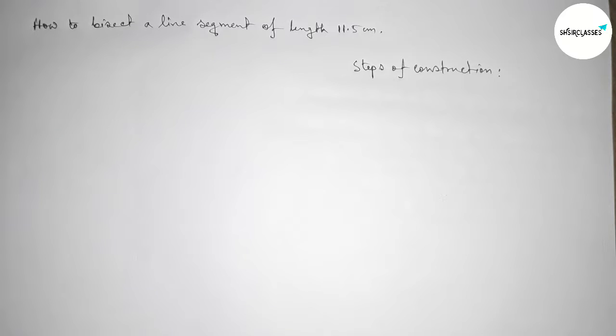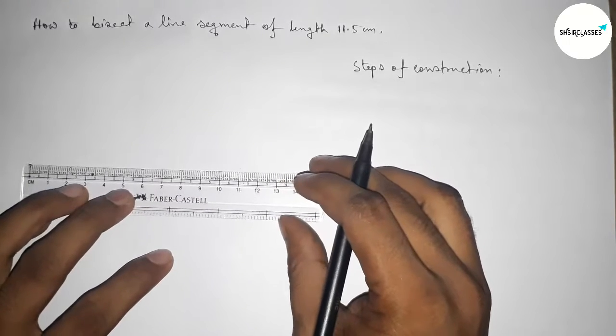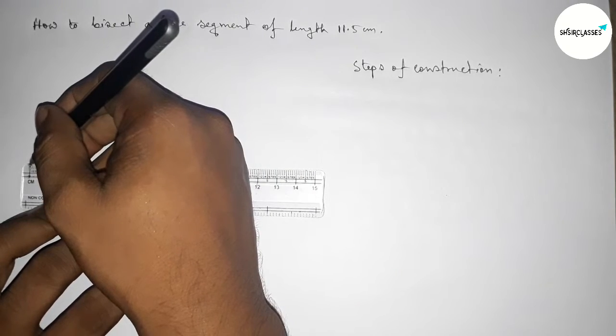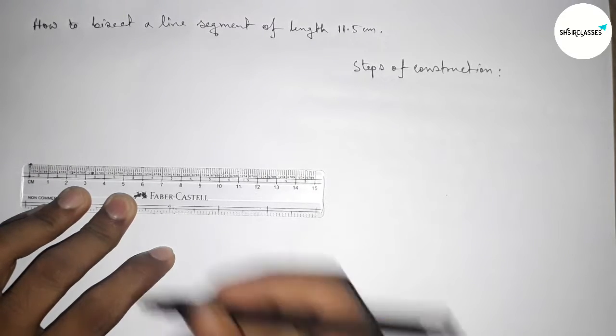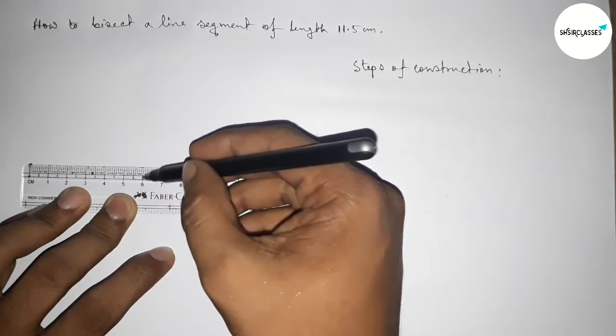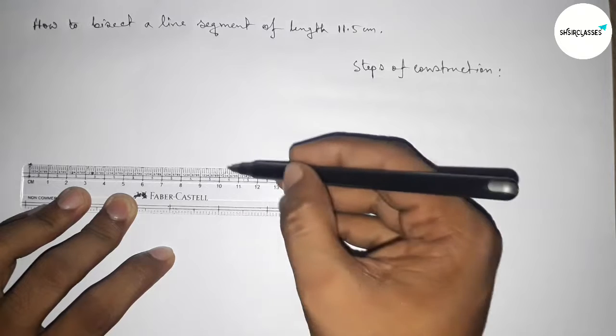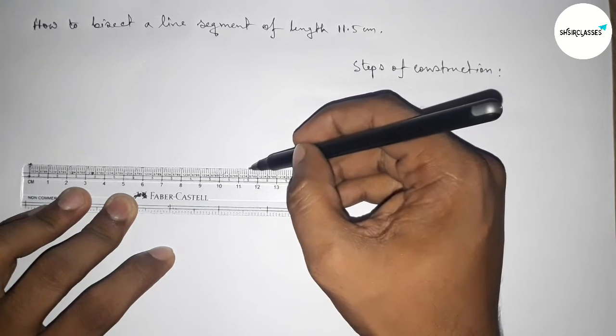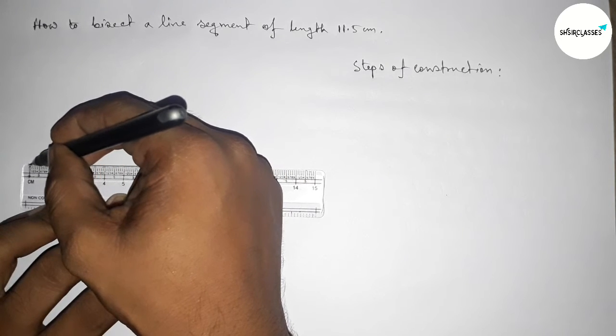Next, first we have to draw here a line of length 11.5 centimeters. So this is starting at zero - one, two, three, four, five, six, seven, eight, nine, ten, eleven - and this is eleven point five centimeter length.